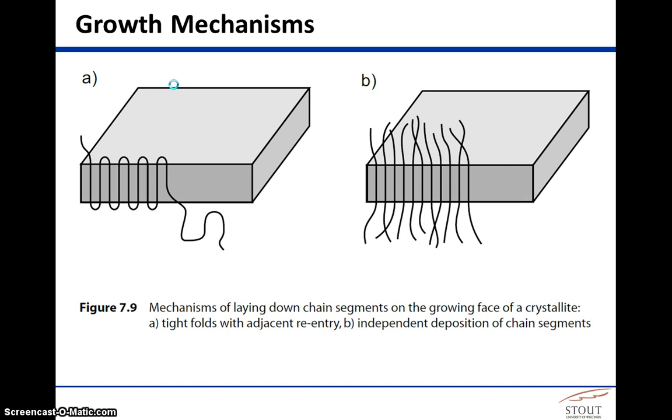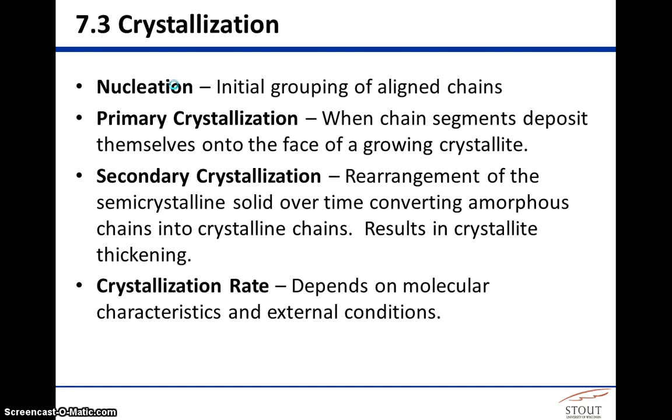So we've already pretty much discussed this figure earlier. This is the Peacock figure 7.9 that's looking at the difference between the tight folding of a single chain or multiple chains that are aligning themselves. We've already vetted that idea pretty well.